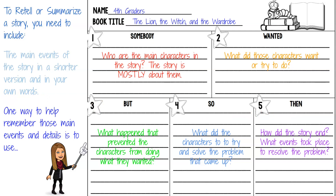When we think about each one of those sections, we can ask ourselves a few questions. When we get to our 'Somebody,' we should think about the main characters in the story — who the story is mostly about. For example, if I'm thinking about The Lion, the Witch, and the Wardrobe, I really don't need to mention the professor in a summary because he is not one of my main characters, so I would not include him.